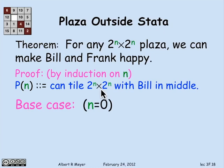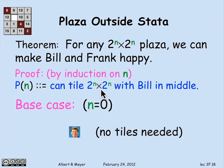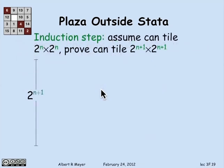Base case n equals 0 is covered. Now we come to the double-size square — 2 to the n+1 by 2 to the n+1. I have to tile that with Bill in the middle. But I have a fairly powerful induction hypothesis: I can assume I can tile the half-size 2 to the n by 2 to the n square with Bill in the middle. The double-size square is made out of four half-size squares, so I can try to fill up the whole 2 to the n+1 by 2 to the n+1 square by using my ability to tile those four sub-squares.